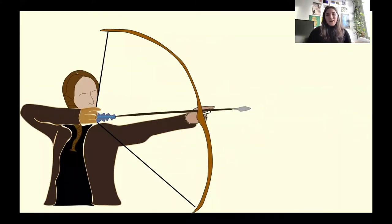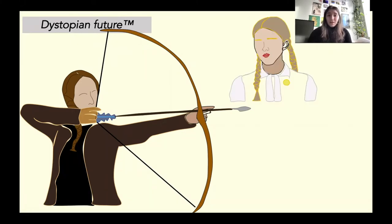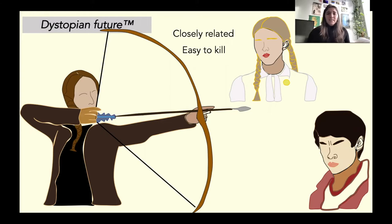So you are now a player in a dystopian future. Between you and survival stands two people, the first being your little sister, to whom you are obviously closely related, but who is also pretty easy to kill. The second person in your way is this big unrelated guy, you've never met him before, but he's going to put up quite a fight. So the question then becomes, who do you attack first?